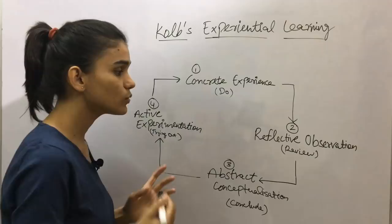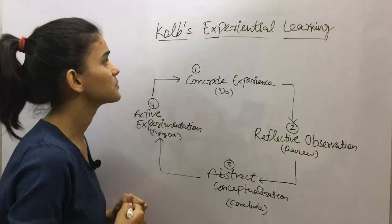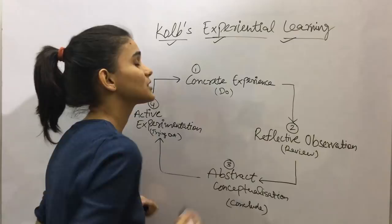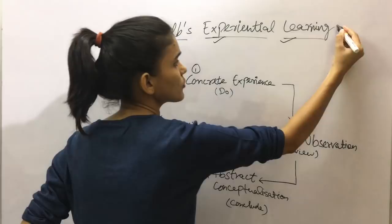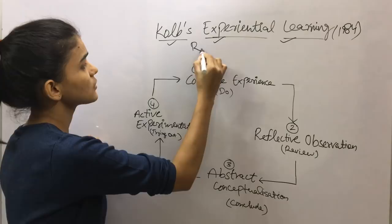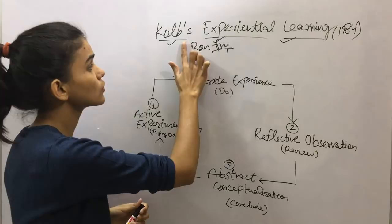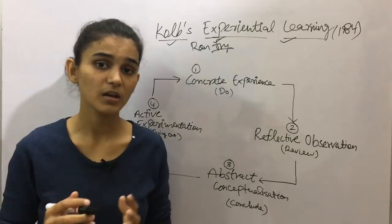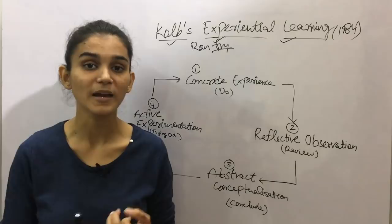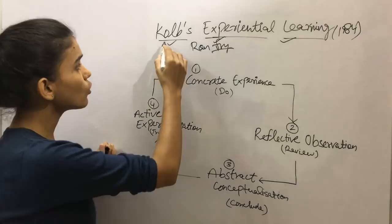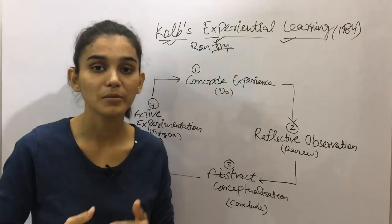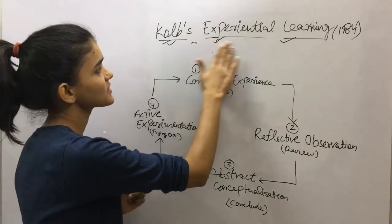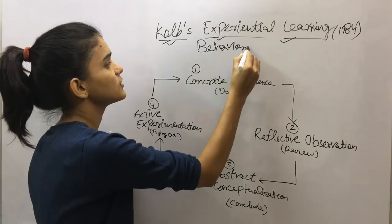We will cover at least the first two steps today. Kolb's Experiential Learning — 'anubhav-atmak adhigam' — means experiential learning. In 1984, it was published by Ron Fry and David Kolb, who is also called an American Psychologist, born in 1939. Essentially, it combines learning by doing, and if we mix this theory, we can say it is behaviorism plus constructivism.